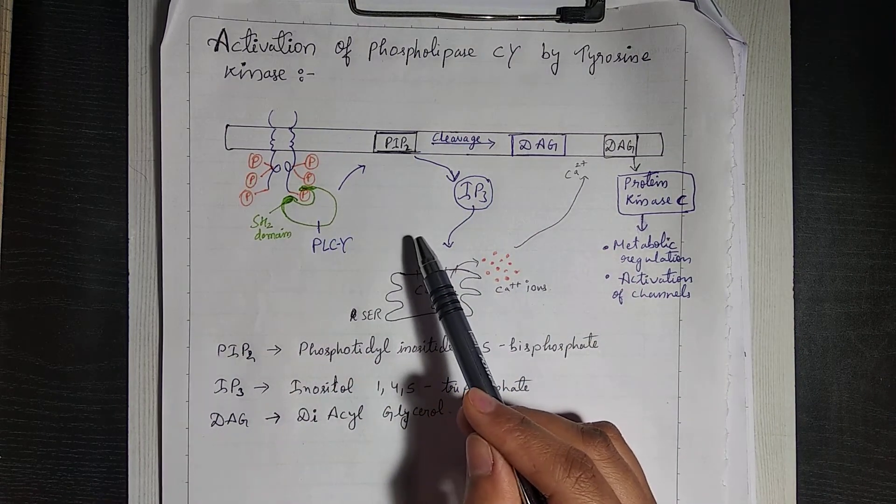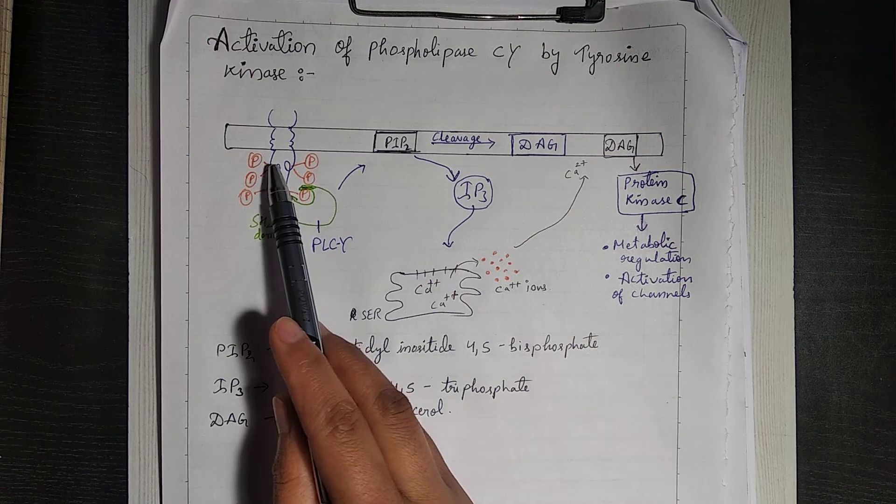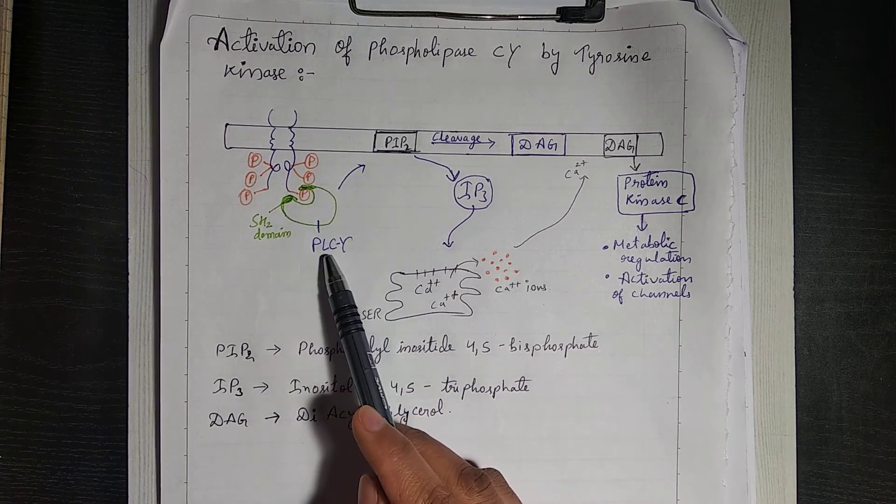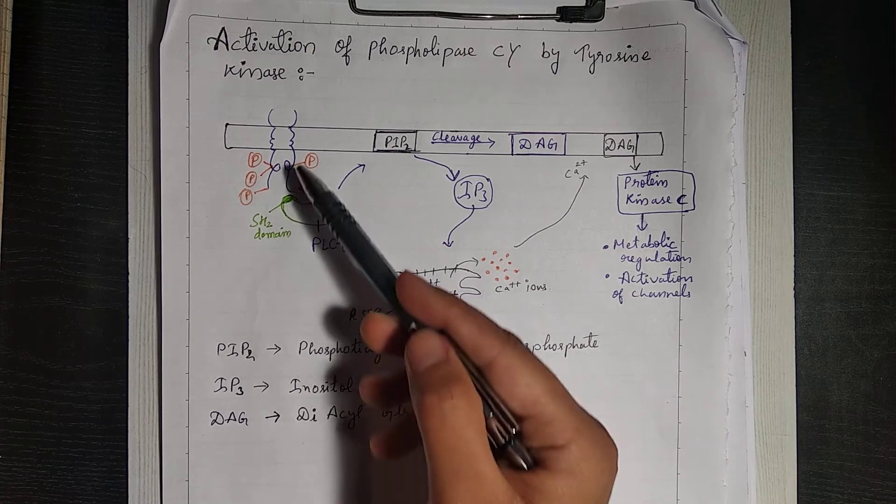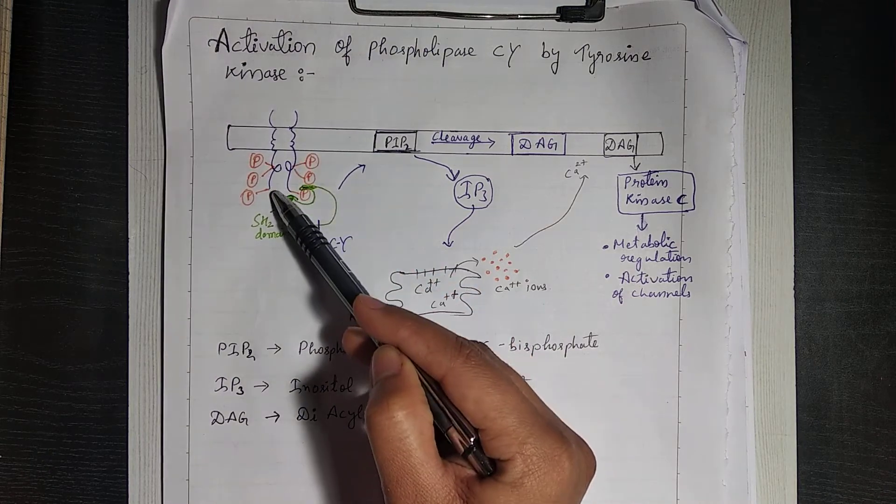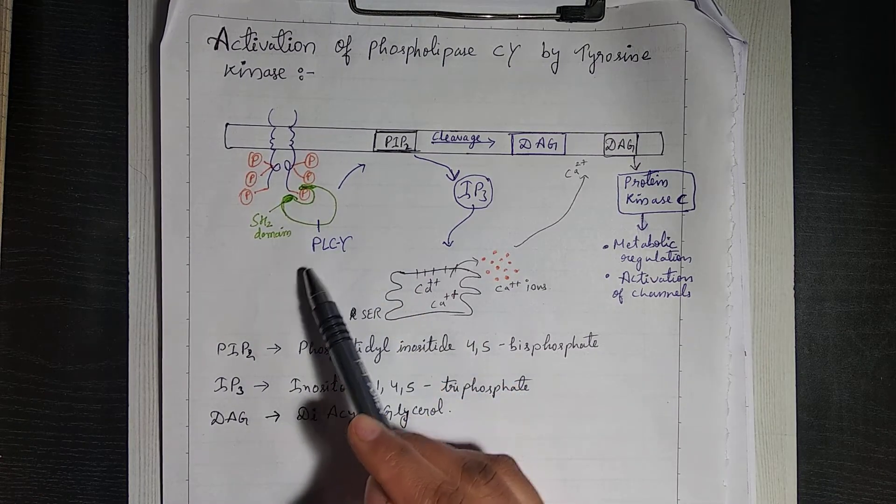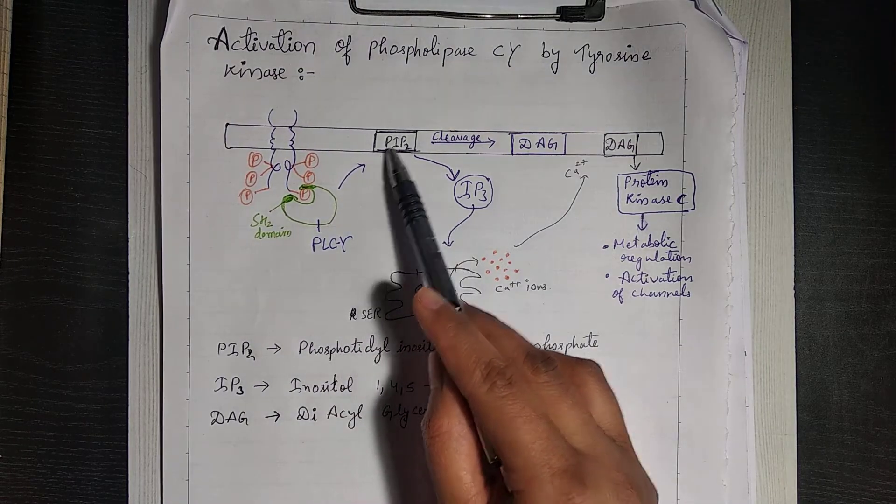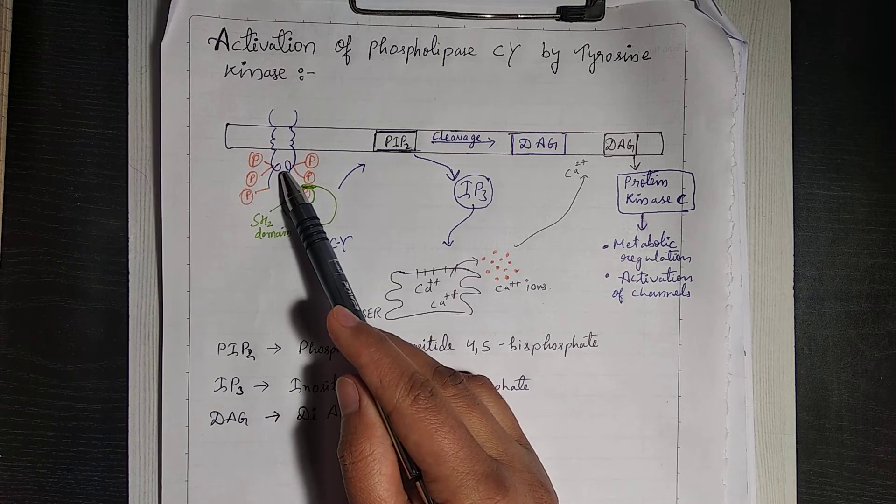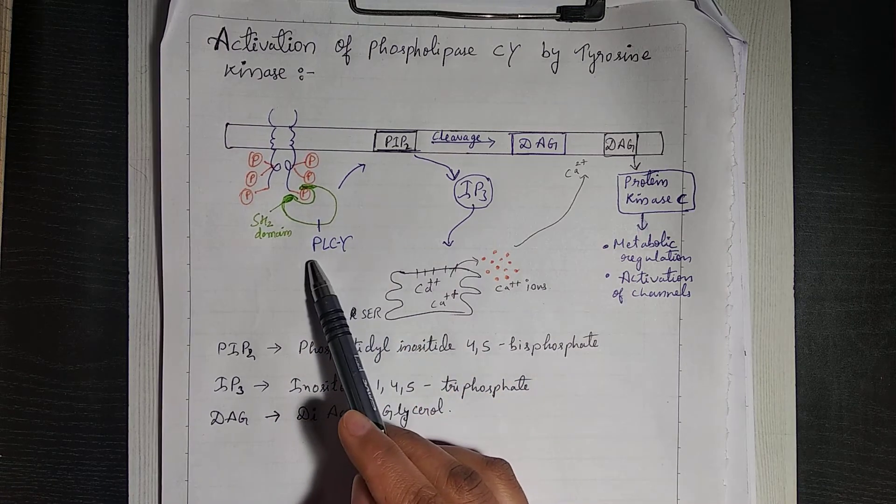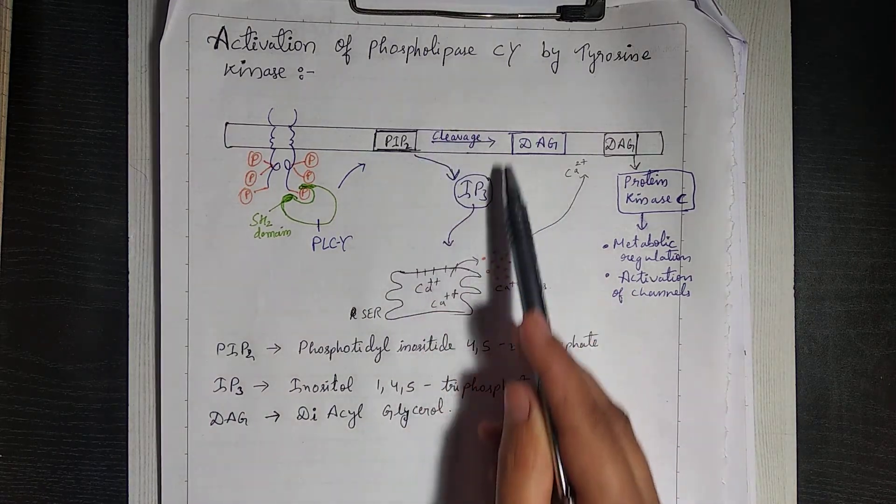As you know, in GPCR signaling we discussed a similar pathway, but there the receptor was GPCR and it was activating PLC beta unit. Now here in this pathway the receptor is tyrosine kinase receptor. So this tyrosine kinase receptor will activate a unit that is PLC gamma and the whole other pathway will remain the same. But the only difference here is the type of receptor and the subunit it is activating, and because of this the name of this pathway is Phospholipase C gamma, whereas there the name was Phospholipase C beta.